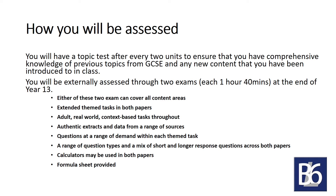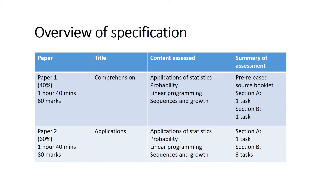Calculators may be used in both papers and formula sheets are also provided. Taking a closer look at the two examination papers: Paper 1 is 60 marks and Paper 2 is 80 marks, so there is more weighting towards Paper 2, the applications paper. This is because for Paper 1 we have a pre-release source booklet that we receive approximately in April before the exam in May, whereby we scrutinise and think about possible questions that may be asked in the actual exam itself.